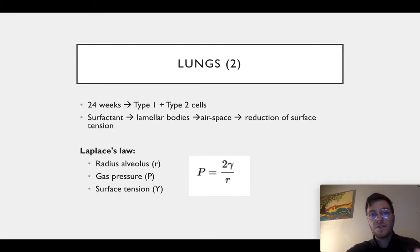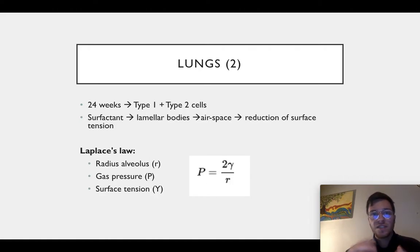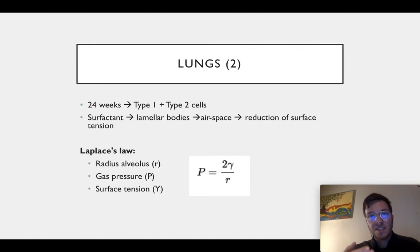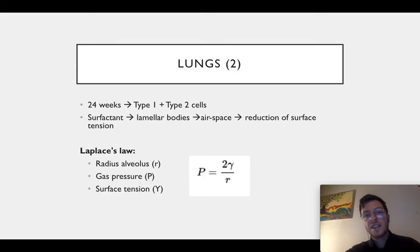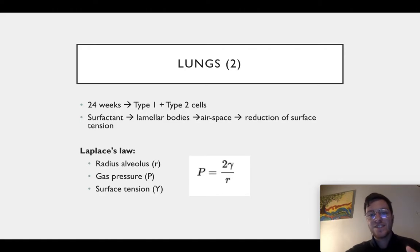When pathogens enter your alveoli, they clean it up. At 24 weeks, your premature lung is formed — you have your type 1 and type 2 cells, but it's not functional yet. From then on you start making surfactant, and it takes at least 10 more weeks before you have enough to be able to inhale and exhale properly yourself. The surfactant is stored in the lamellar bodies and is then released into the airspace of the alveoli, where it can reduce the surface tension.